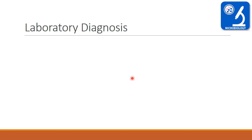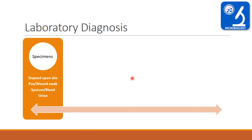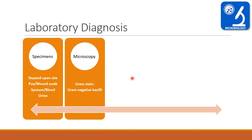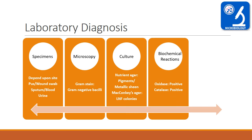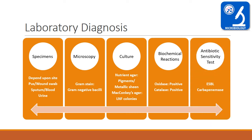Laboratory diagnosis of Pseudomonas infections: specimens collected depending on site include pus, wound swab, sputum, blood, or urine. Microscopy shows gram-negative bacilli on gram stain. On culture, Pseudomonas aeruginosa produces a greenish pigment with metallic sheen on nutrient agar, and lactose non-fermenting pale colonies on MacConkey agar. Biochemically, it is oxidase positive and catalase positive. Importantly, Pseudomonas possesses drug-resistant plasmids and produces ESBL and carbapenemase enzymes.